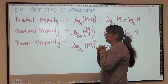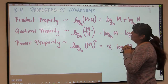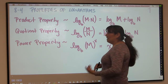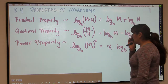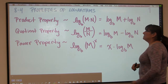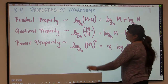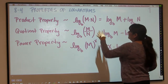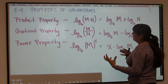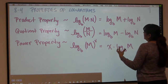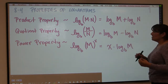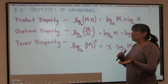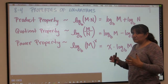Today we're going to talk about properties of logarithms, and there are three main properties. We have the product property, the quotient property, and the power property. Basically, when you have a log of a product you can split or expand that logarithm into addition. This should make sense because the logarithm is basically like the exponent.